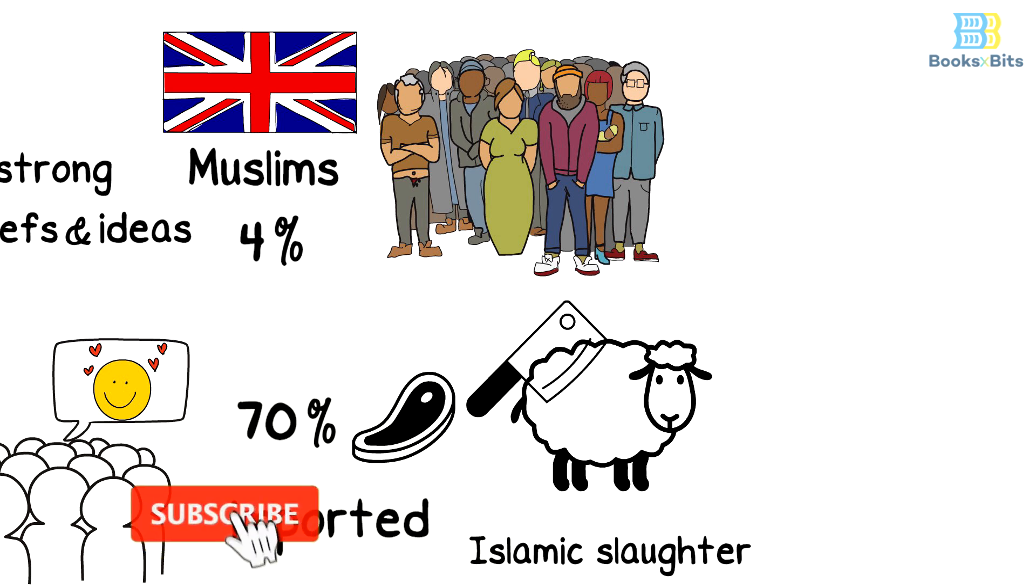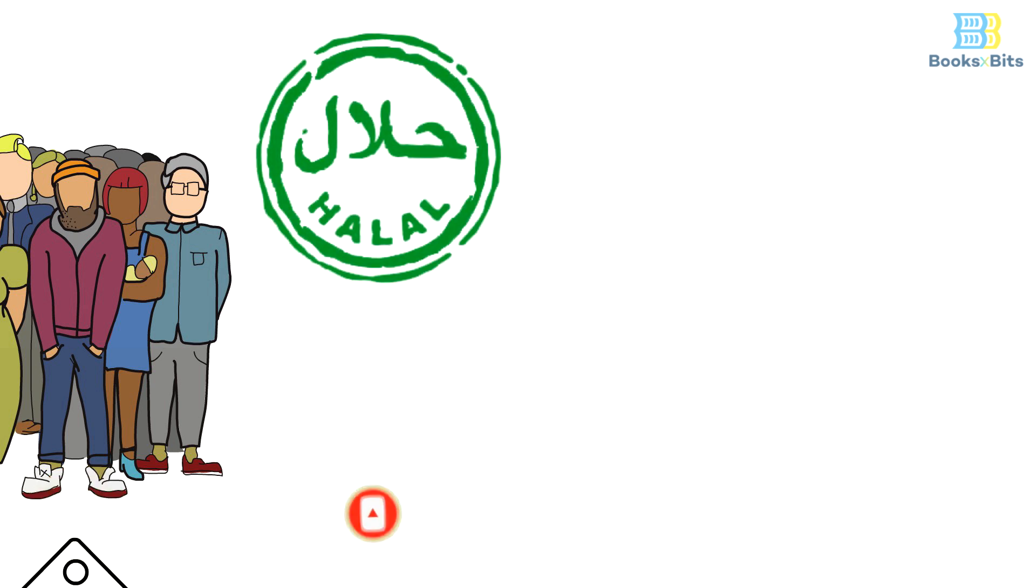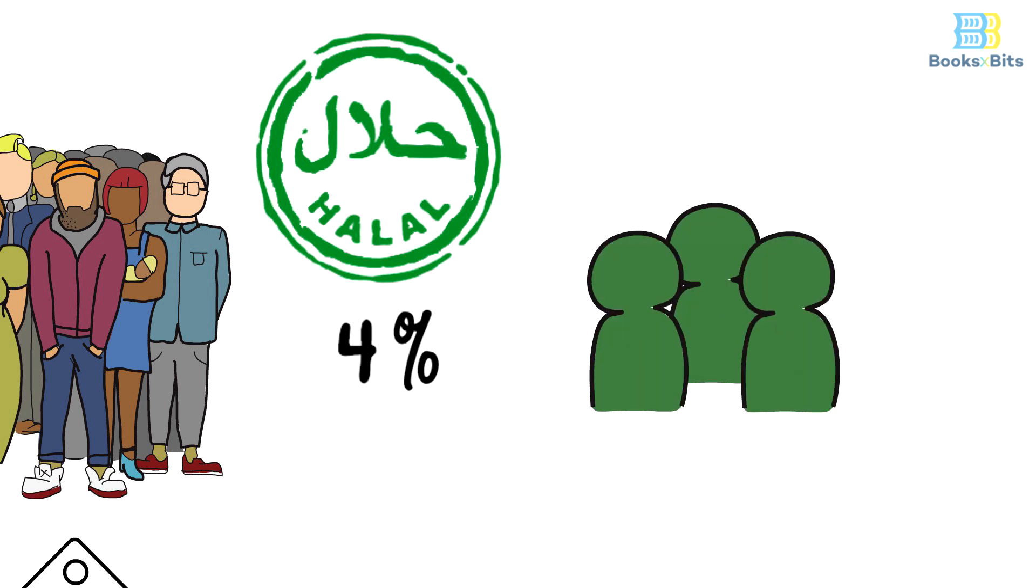Consequently, the majority of the UK population eat meat that's slaughtered according to Islamic law, although those who can only eat halal meat make up only 4%. This phenomenon occurs because the majority of the population is more flexible in their choices than the minority.